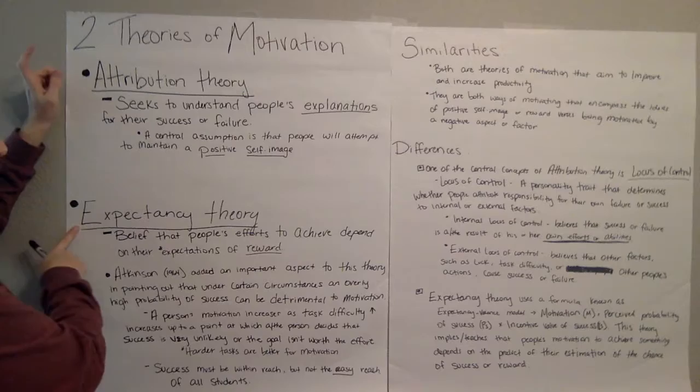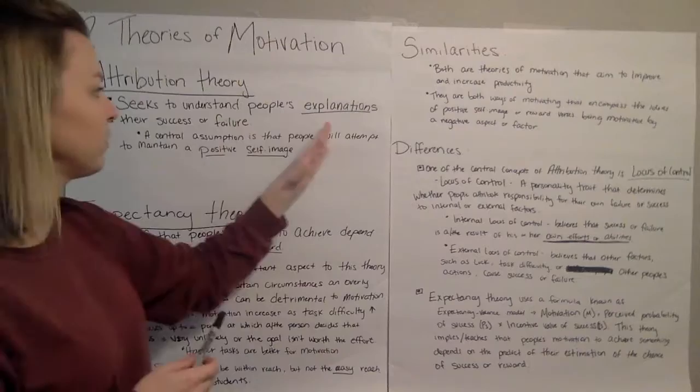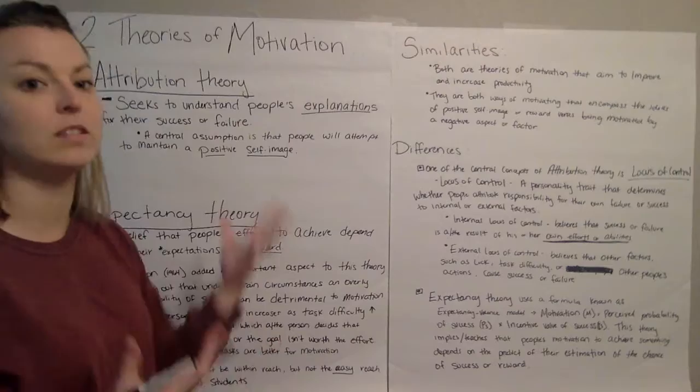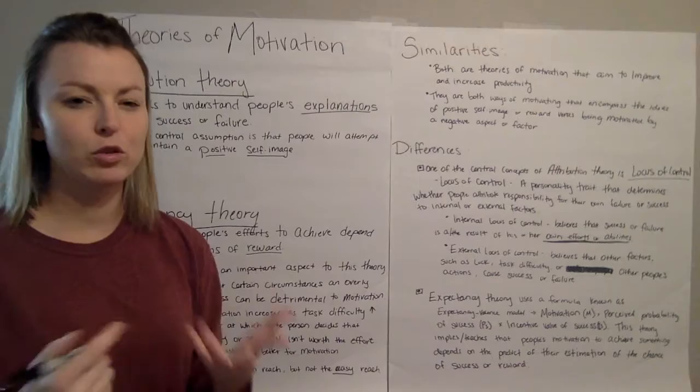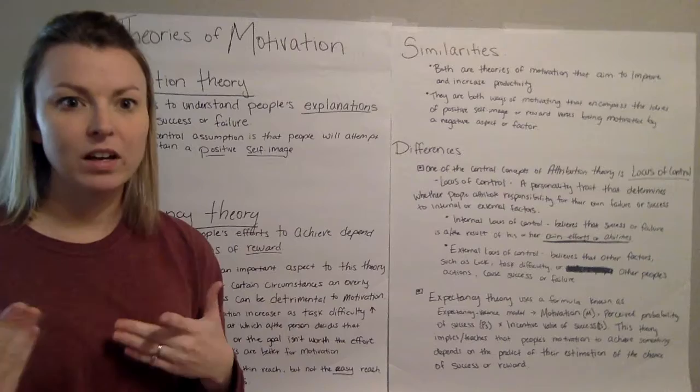Starting with Attribution Theory, this is a theory that seeks to understand people's explanations for their success and failure. A lot is based upon these explanations of where that success or failure occurs. An essential assumption is that people will attempt to maintain a positive self-image. And that is done in a way that if something good happens, people usually attribute that to their own abilities. Whereas if a negative event occurs, that is usually factored to something outside of the person's control.